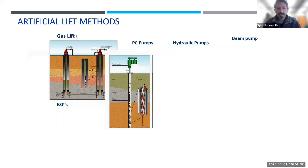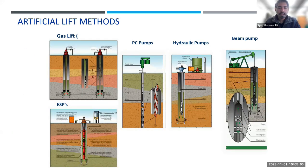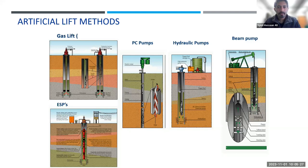There are different types of artificial lift methods available commercially, all with a lot of success. We have gas lift systems, electrical submersible pumps, hydraulic pumps, and beam pumps — beam pumps being something you've likely seen in the oilfield, kind of the icon of the oil patch. One of them is what we are going to talk about in this presentation: the progressive cavity pump.